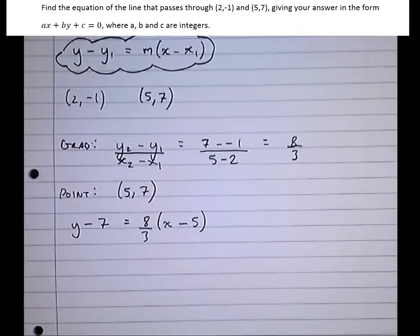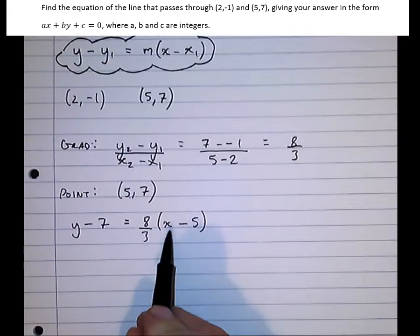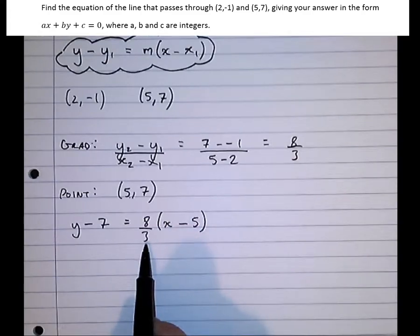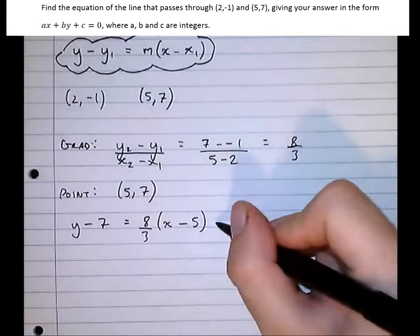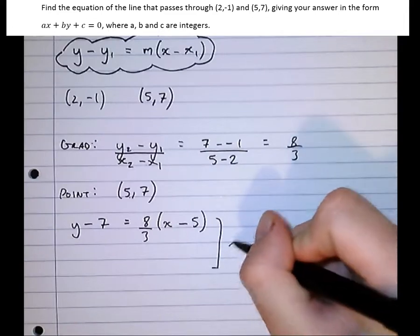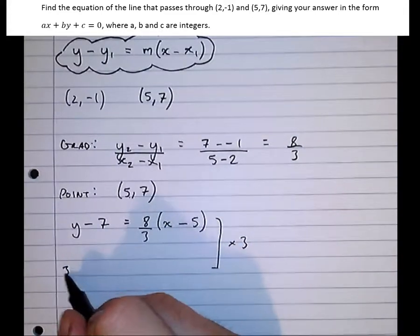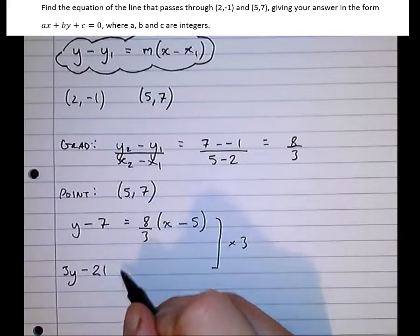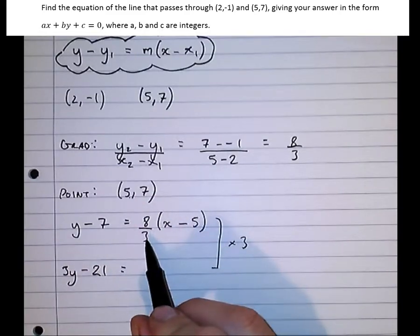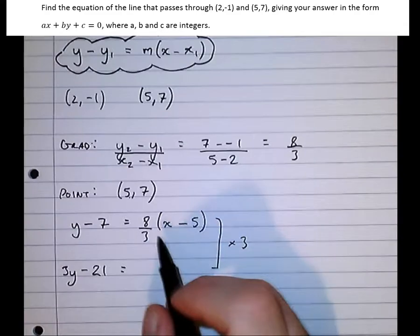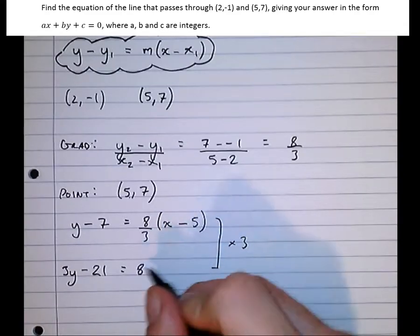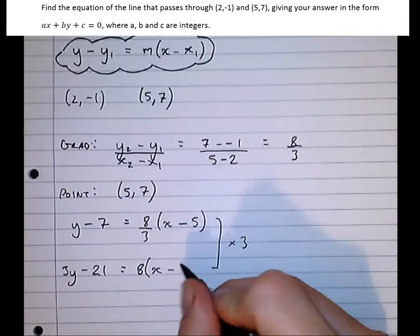So the thing to do here, first of all, we could multiply this out, but while it's still a fraction, it's quite difficult. So if we times both sides by 3, we'll see that it makes things much easier. So 3y minus 21, and if we multiply this side by 3, we undo the divide by 3 to get 8x minus 5.